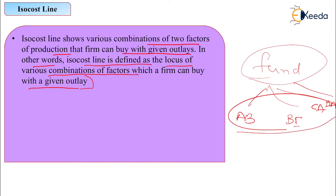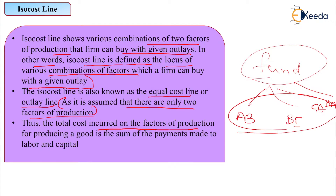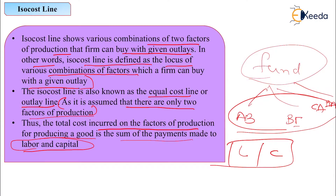The isocost line is also known as the equal cost line or outlay line. It is assumed that there are only two factors of production — that may be capital, land, or labor. The total cost incurred on factors of production for producing a good is the sum of payments made to labor and capital. Whatever cost you incur in terms of labor and capital is considered the total cost and is part of your isocost curve.